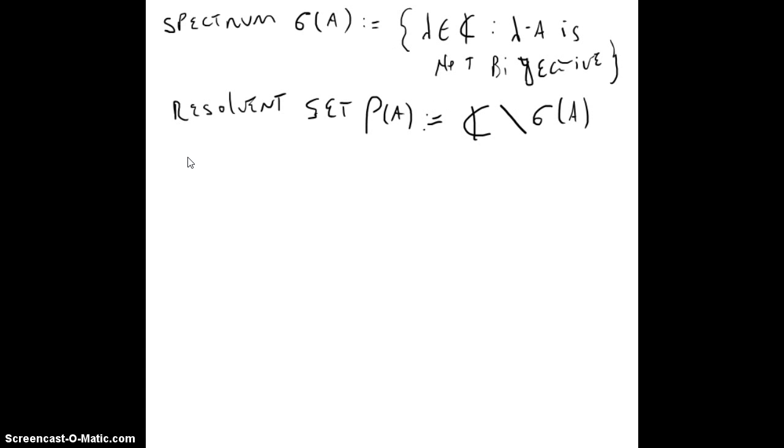And the resolvent, called just the resolvent operator, R(λ,A), is going to be (λ minus A)^(-1) with λ in ρ(A). This is going to be just the inverse of λ minus A.